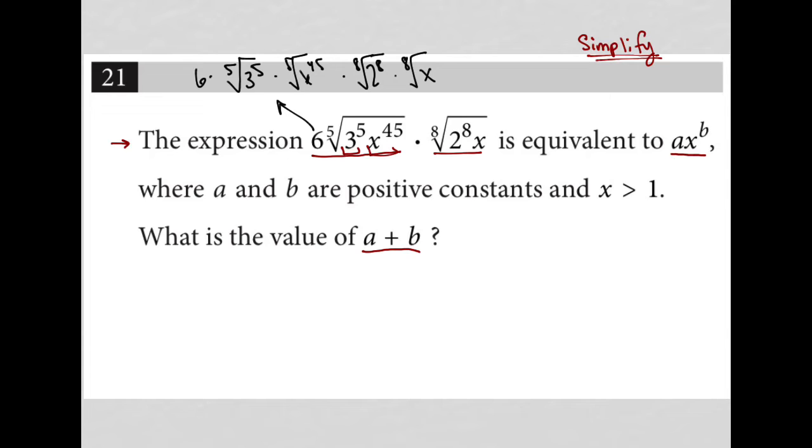Each of these things can be simplified, well, not each of them. 6, we'll just say 6. The 5th root of 3 to the 5th power is just 3.